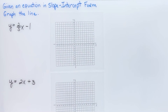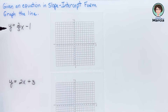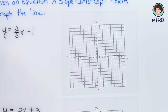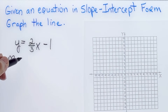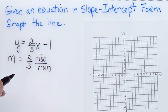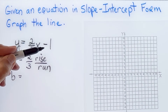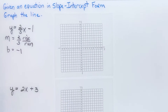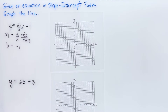Given an equation in slope-intercept form, we're going to graph the line. Our first equation is y equals two-thirds x minus 1. I know this is in slope-intercept form, so my slope m is two-thirds — rise over run — and my y-intercept is negative 1 because of the subtraction sign. First, we go to the y-intercept and plot the point.